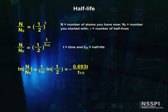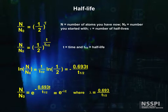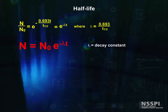It's usually changed to n over n0 is equal to e to the minus 0.693 times time divided by the half-life, or equivalently e to the minus lambda times t. And finally, the form you see in the textbooks: n equals n0 times e to the minus lambda t, where lambda is the decay constant and is equal to 0.693 divided by the half-life.